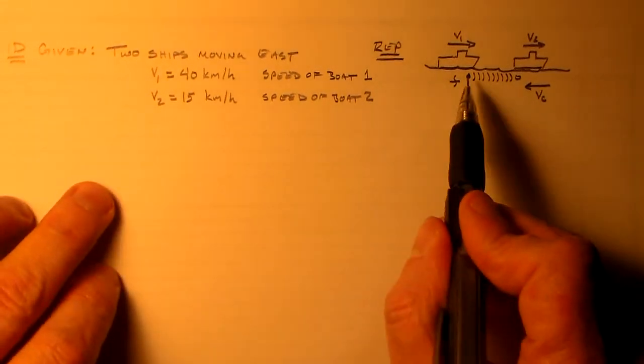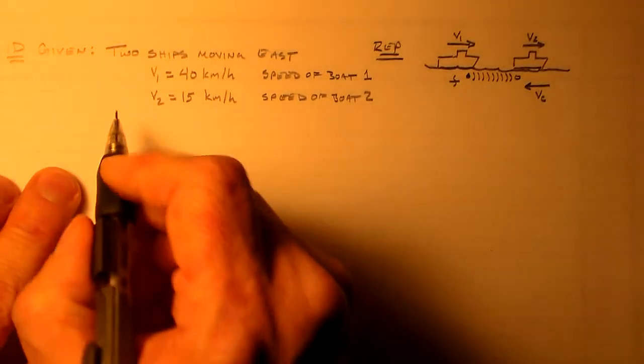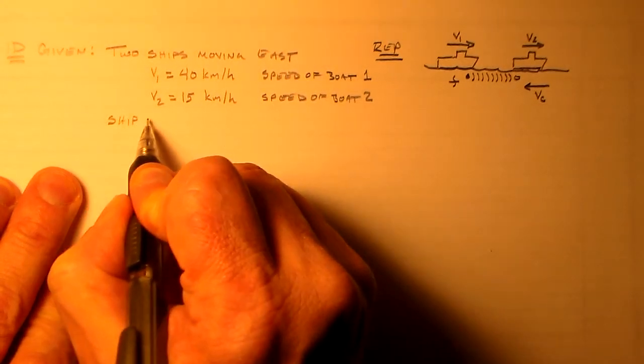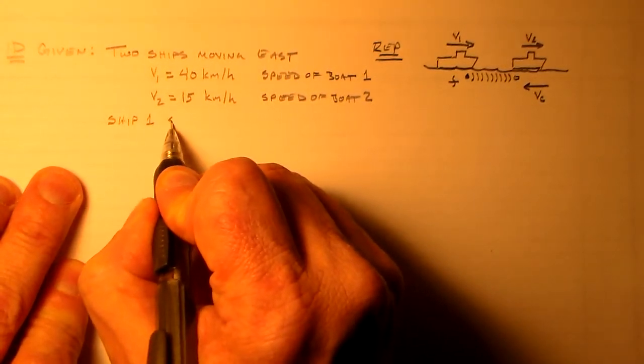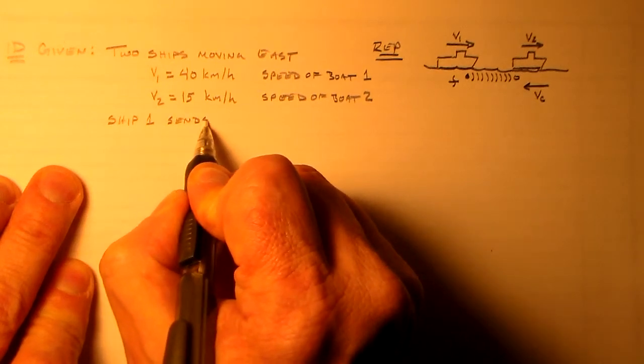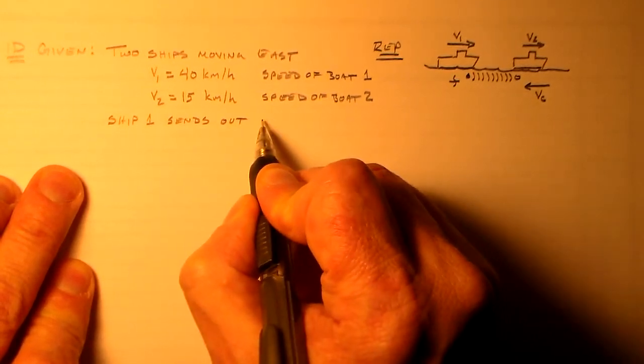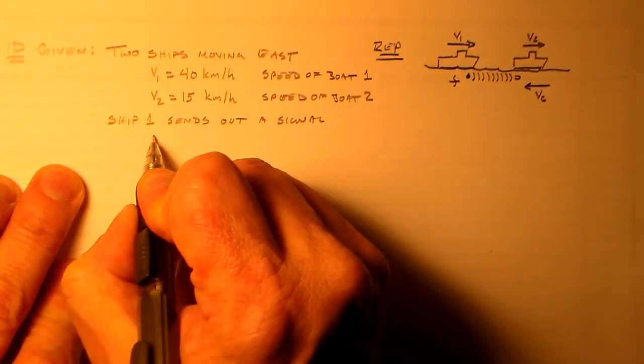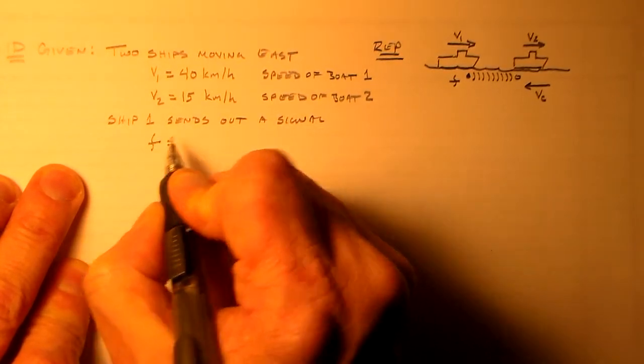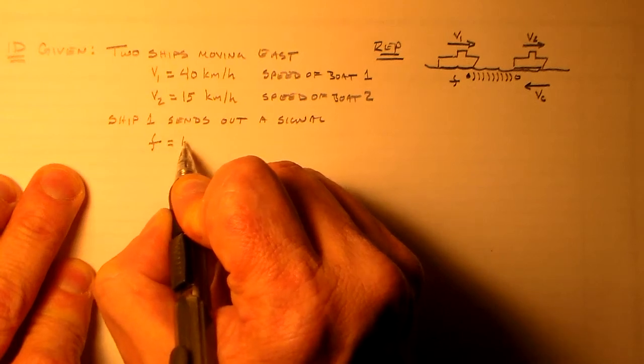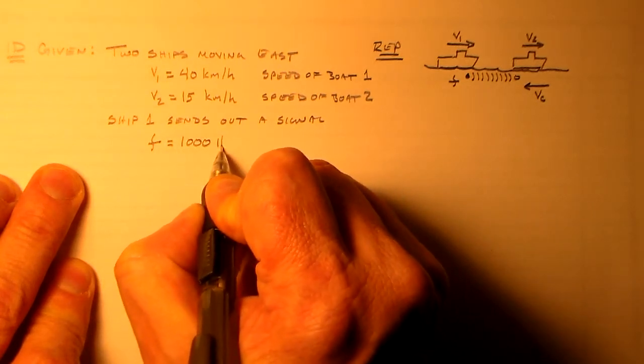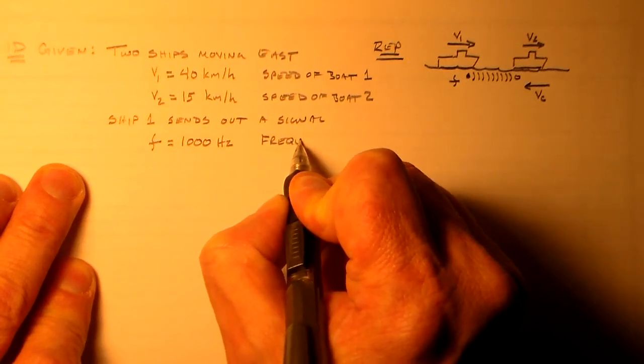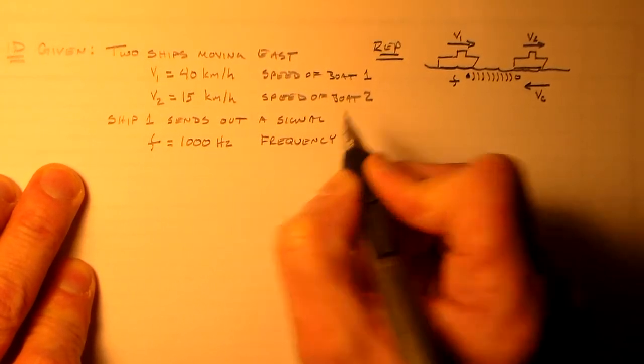So it's a little early to say that. We want to figure out what these other guys are. So ship one sends out a sonar signal, sends out a signal of frequency F is equal to, let's just call it 1,000 hertz, 1 kilohertz.